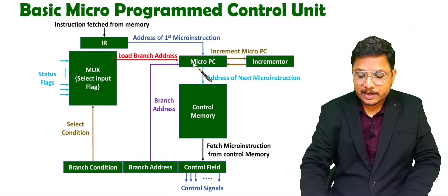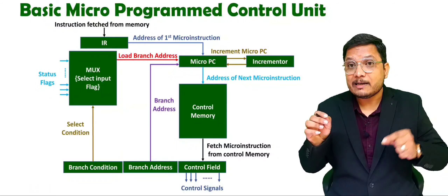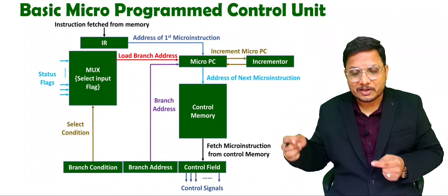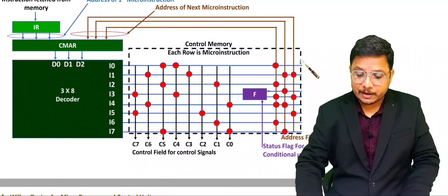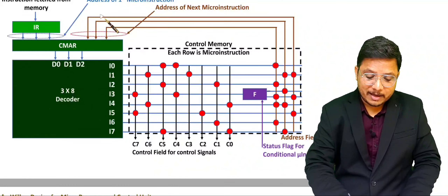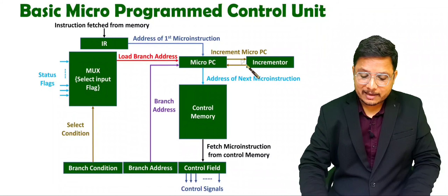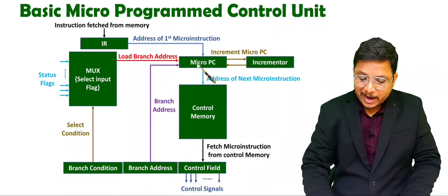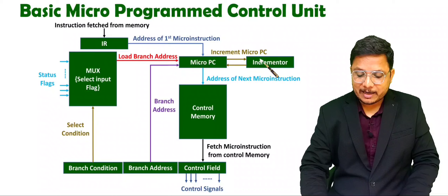Here, if you observe, an incrementer is there. In my previous video, I have already explained Wilkes design. In Wilkes design, the disadvantage was that the control memory was having a next address instruction field — that is, control memory had two things: control signals and an address field. That address field was giving the address of the next micro-instruction, and that was the disadvantage. Now, that disadvantage we are removing here. What we are doing here is just incrementing the micro-PC after every micro-instruction. So, the incrementer will increment the micro-PC by one once you give the address to the control memory. Once you fetch that micro-instruction from control memory, you need to increment it by one — so the incrementer is there.